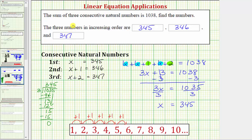Of course, if we wanted to check our work, we could make sure the sum of these three consecutive natural numbers is 1,038. And 345 plus 346 plus 347 is 1,038.